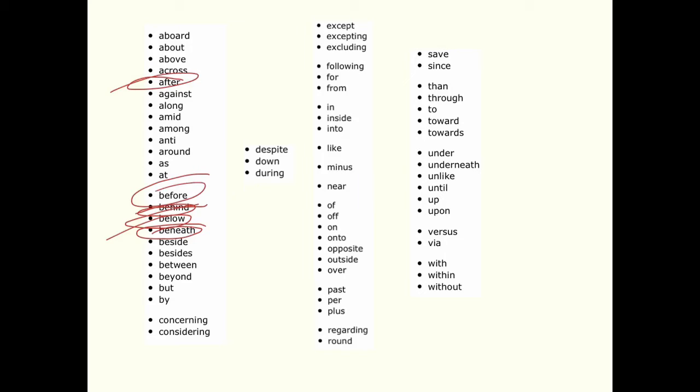So keep in mind, anything that shows a relationship is really a preposition. Its whole purpose is to show how two things in space or time are related.